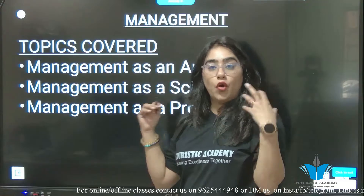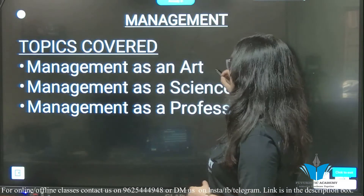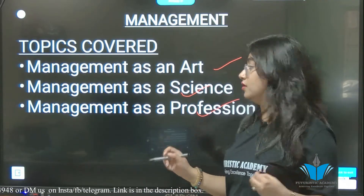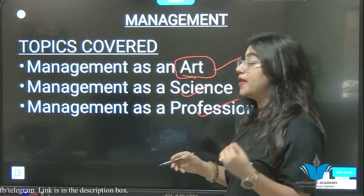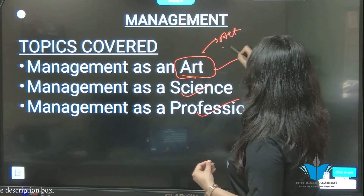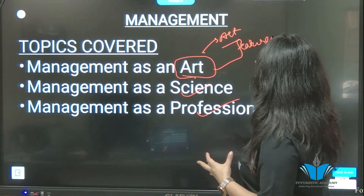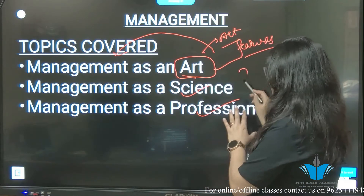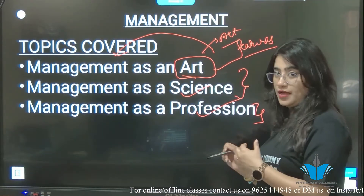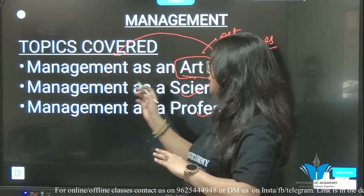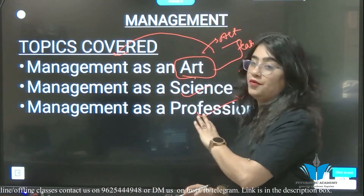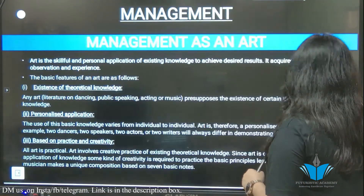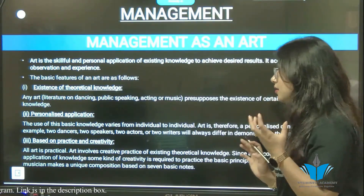So in this video we will be covering three topics: Management as an Art, Management as a Science, and Management as a Profession. We will first define each concept, look at its features, then compare those features with management to see whether management is considered as an art, science, or profession — or none of these.